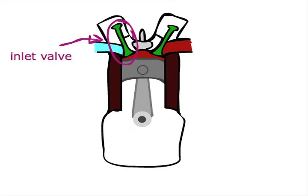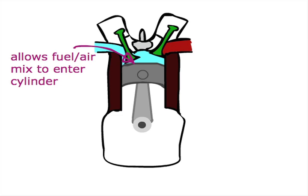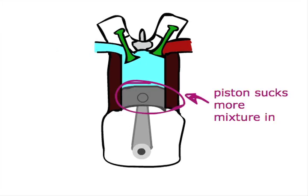This is the inlet valve, which opens to allow a fuel air mixture to enter the cylinder. The piston moves downwards, which sucks the mix through the valve into the cylinder.